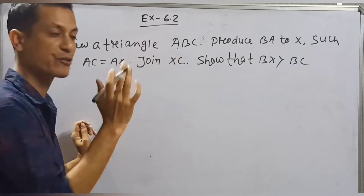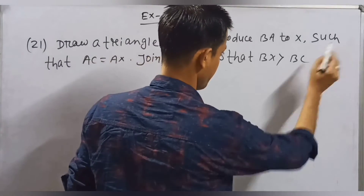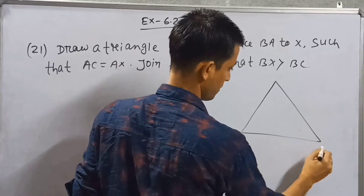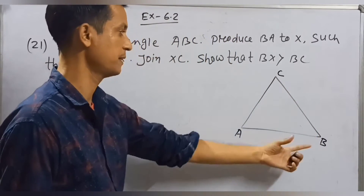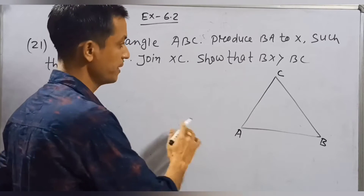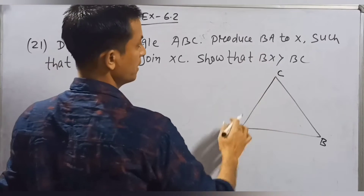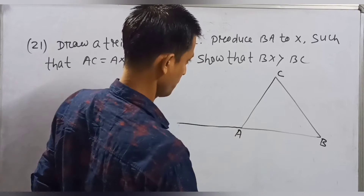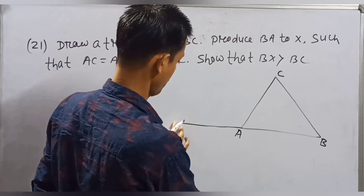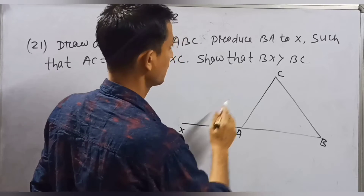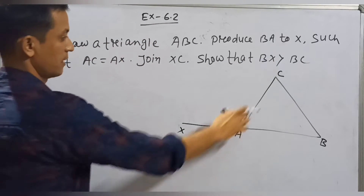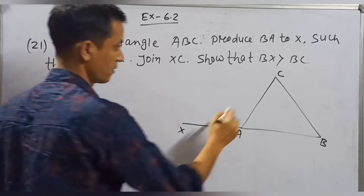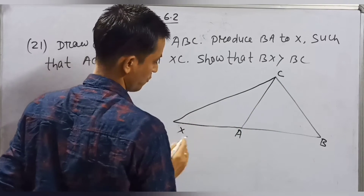First of all, we draw triangle ABC. Then produce BA to X such that AC is equal to AX. Join XC.